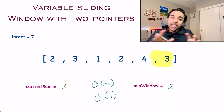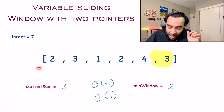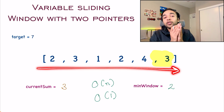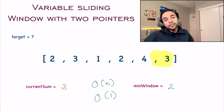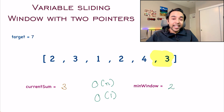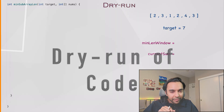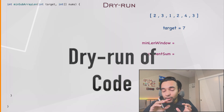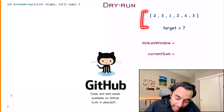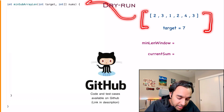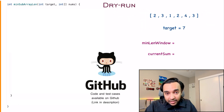Now, based upon this idea, let us quickly do a dry run of the code. On the left side of your screen, you will have the complete code to implement this solution. And on the right, I have my sample array that is passed in as an input parameter to the function min subarray length.